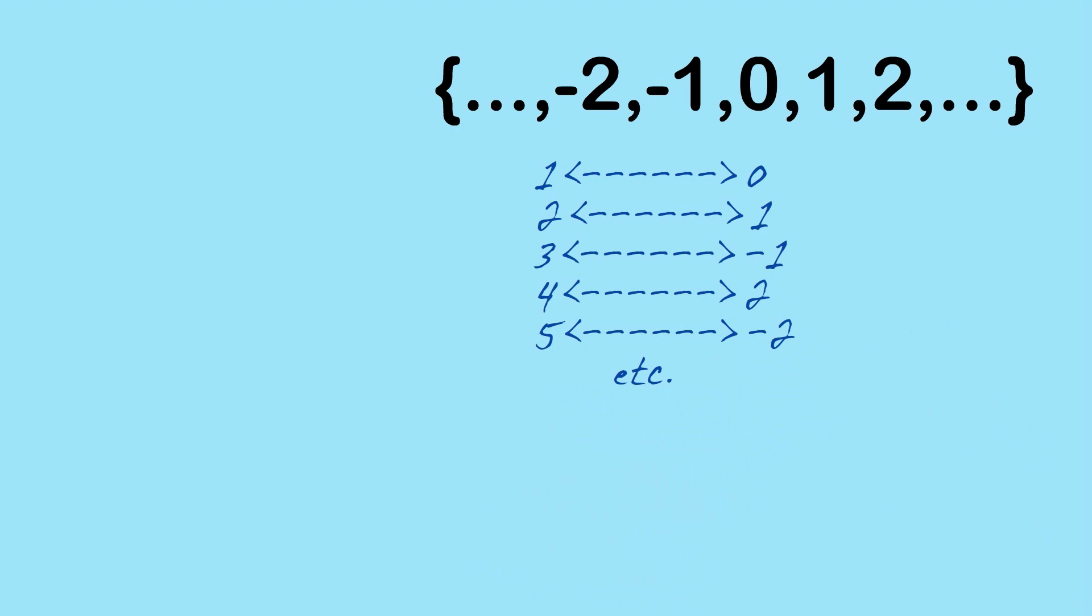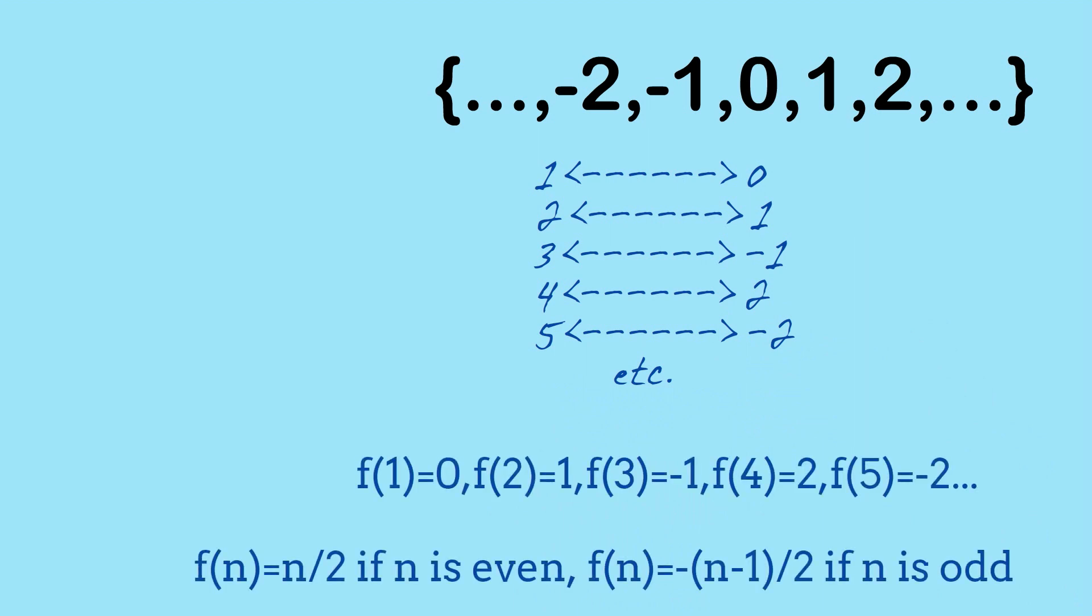In fact, you can actually work out an algebraic expression that shows us how I've done the linking. We can say that, we'll call it a function f, we'll say f of n equals n on 2 if n is even, and f of n equals negative n minus 1 on 2 if n is odd. And that will do exactly the linking that I've described.